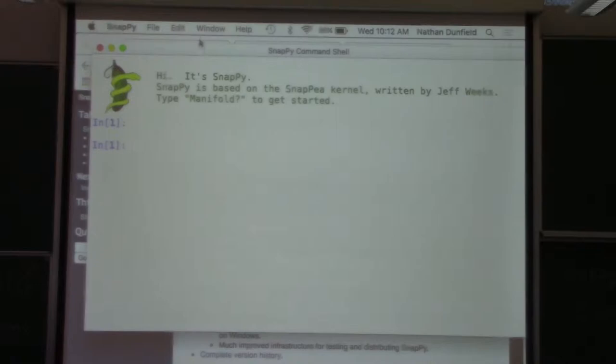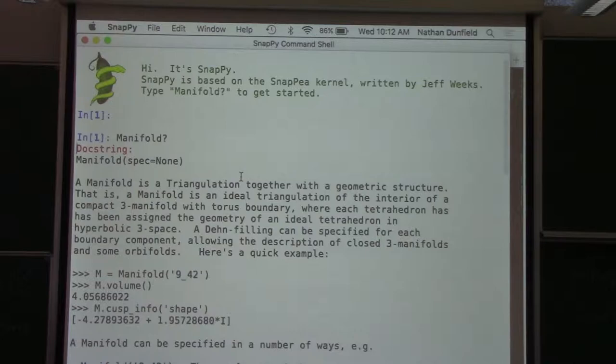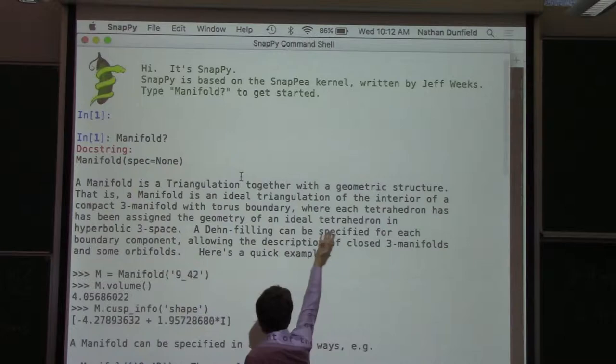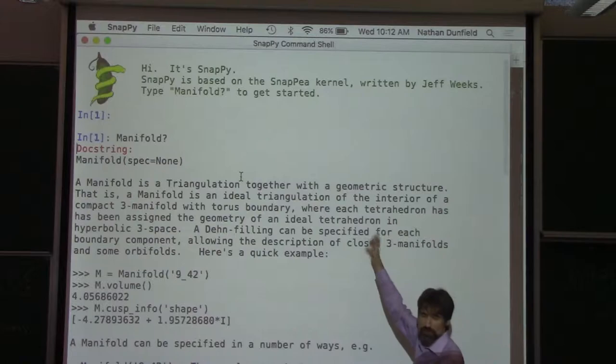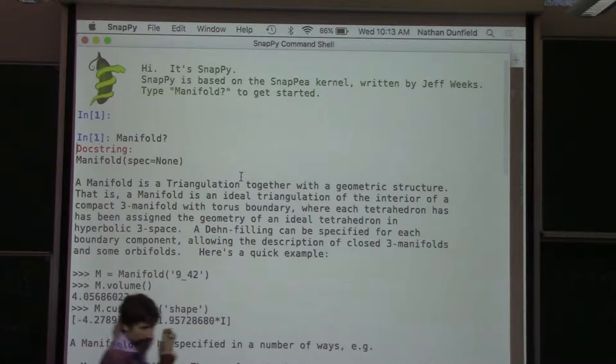So this is the basic interface when you start the program. You see some kind of command line and a little flashing cursor. Command line interface is always confusing. You never know what you're supposed to do. There's a little hint though, at the top it says we should type manifold. And typing something and putting a question mark after it is one of the two key things you need to know to use SnapPy. When you type question mark after something, it brings up the documentation. So it says a manifold is a triangulation together with a geometric structure.